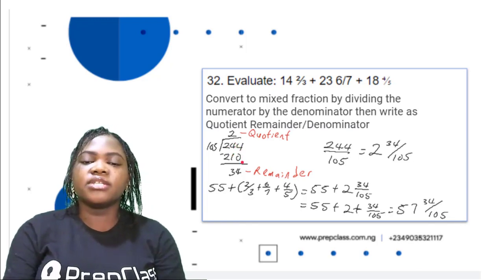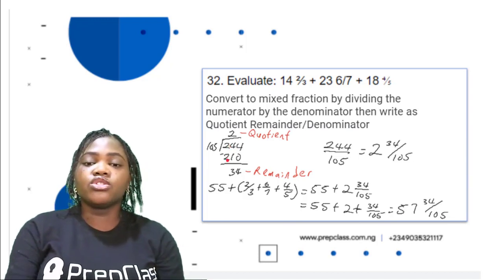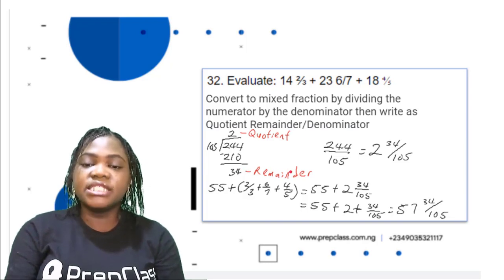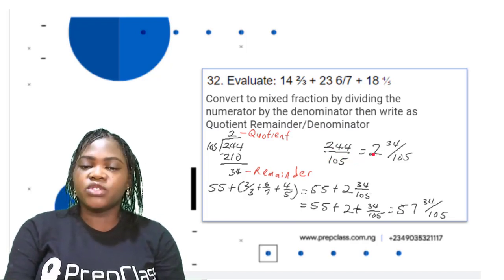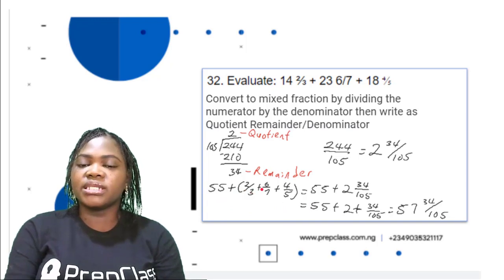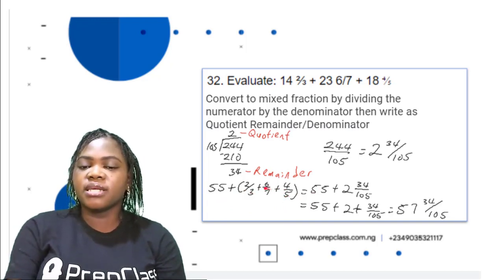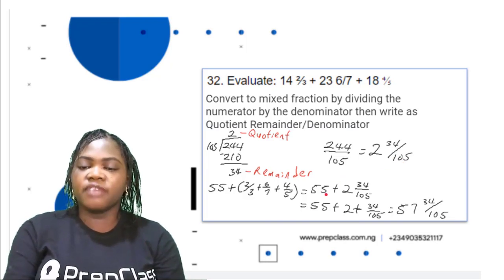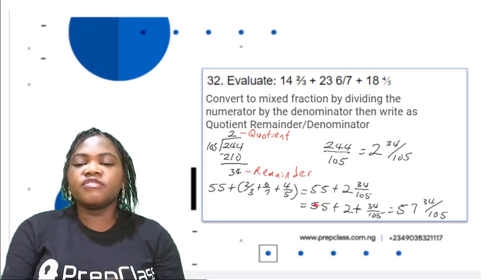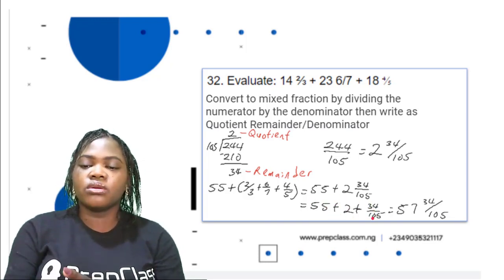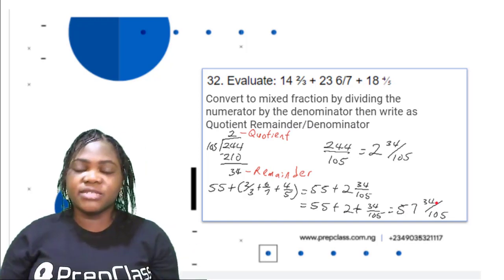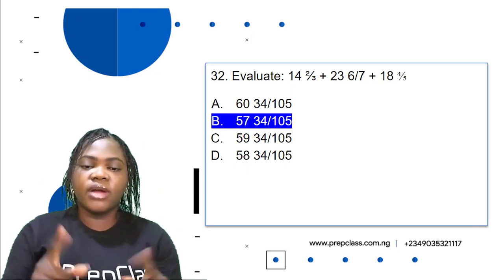244 ÷ 105: 2 × 105 = 210. 244 − 210 = 34. So 244/105 = 2 and 34/105. We had 55 from the whole numbers, so 55 + 2 and 34/105 gives us 57 and 34/105. The correct option is E: 57 and 34/105.